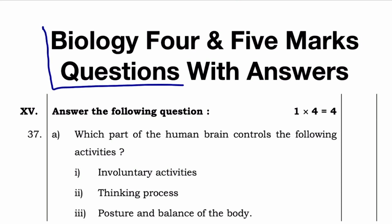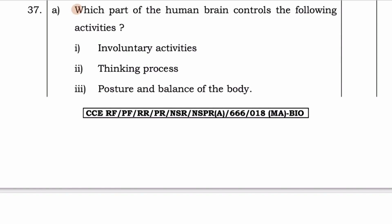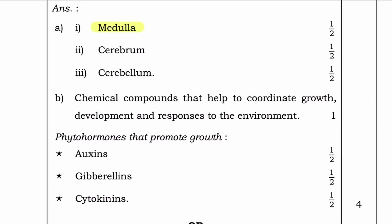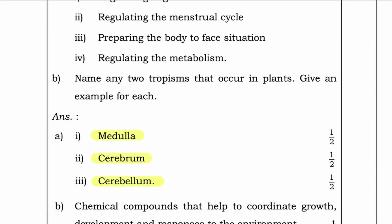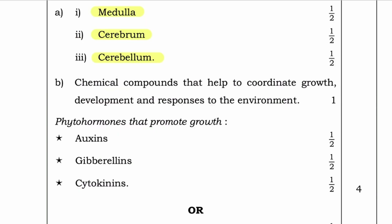Now biology 4 and 5 marks questions with answers. Question: Which part of the human brain controls the following activities? Involuntary activities, thinking process, posture and balance of the body. Answer: for involuntary activities — medulla; for thinking process — cerebrum; and for posture and balance — cerebellum. Question B: What are phytohormones? Name three phytohormones that promote growth. Chemical compounds that help coordinate growth, development and response to the environment are called phytohormones. Phytohormones that promote growth are auxins, gibberellins and cytokinins.